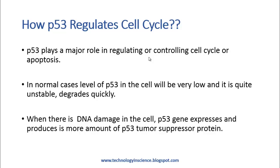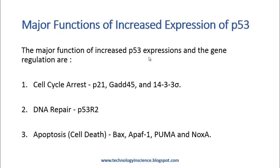When DNA damage occurs in the cell, even though the exact pathway that triggers P53 gene expression is not clearly understood, due to certain signals the P53 gene is expressed and more and more P53 tumor suppressor protein is produced. Increasing the level of P53 expression has three major functions in the cell: cell cycle arrest, DNA repair, and apoptosis.